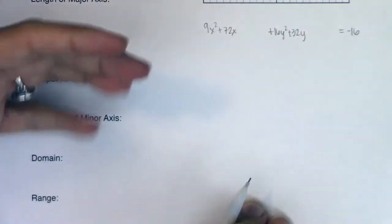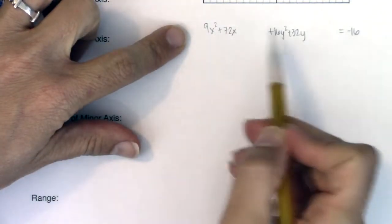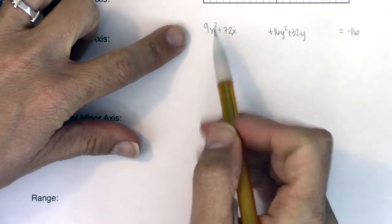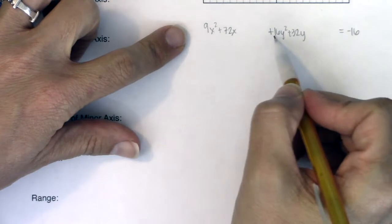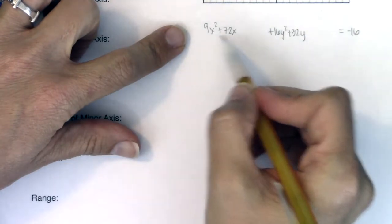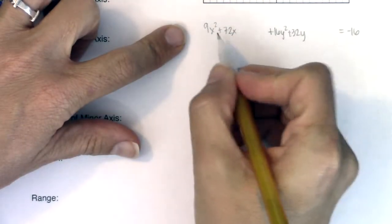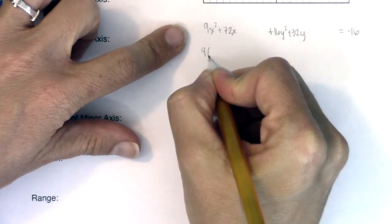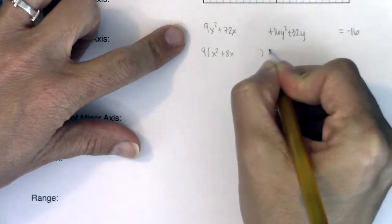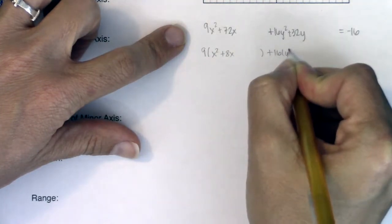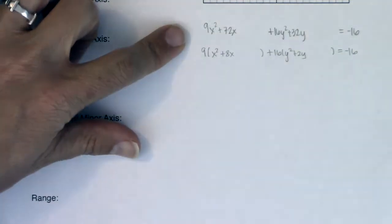In order for completing the square to work, you have to have a lead coefficient of 1 in front of your squared terms. Right now I have a lead coefficient of 9 and a lead coefficient of 16 for the x squared and y squared terms respectively. So we're going to take out the GCF — I'll take out a 9 to get x squared plus 8x, and take out a 16 to get y squared plus 2y, leaving some space.